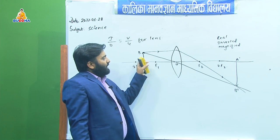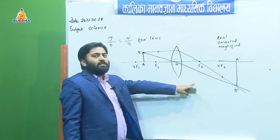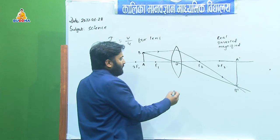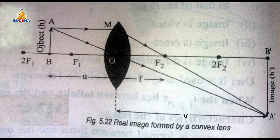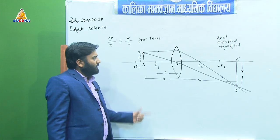Now we introduce some terms. The distance between the focus and optical centre is the focal length. The distance between the object and the lens is the object distance U, and the distance between the lens and the image is the image distance V. The height of the object is O and the height of the image is I. You have to write these definitions in the language part.